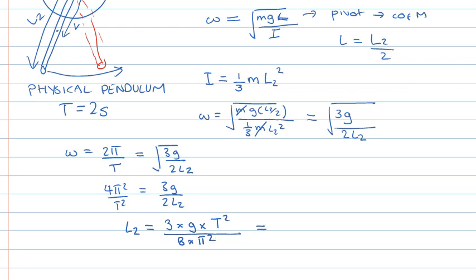Remembering that T equals 2 gives us 3 times 9.8 times 4 over 8 times pi squared. And if we type that into a calculator, that gives us the answer of 1.49 metres. So basically 1.5 metres.